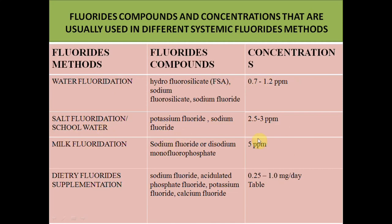By definition, water fluoridation is the upward adjustment of the concentration of fluoride in community water supply to achieve maximum caries reduction at a clinically insignificant level of fluorosis. Water fluoridation is one of the most common delivery mechanisms because of its low cost and wide range. The ppm must be controlled based on climate: in hot regions, less ppm is given (0.7), and in colder climates more is given (1.2). The optimal level of 1 ppm gives 50–70% protection from dental caries.